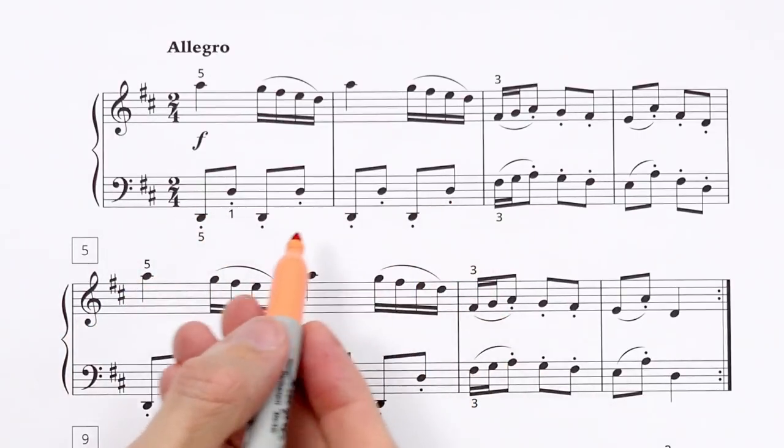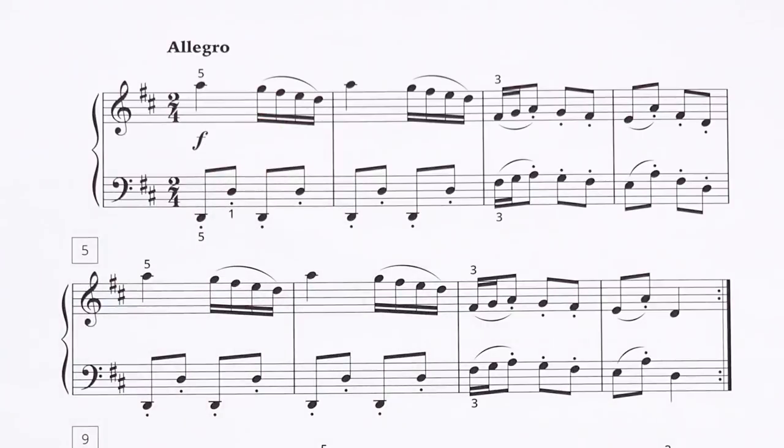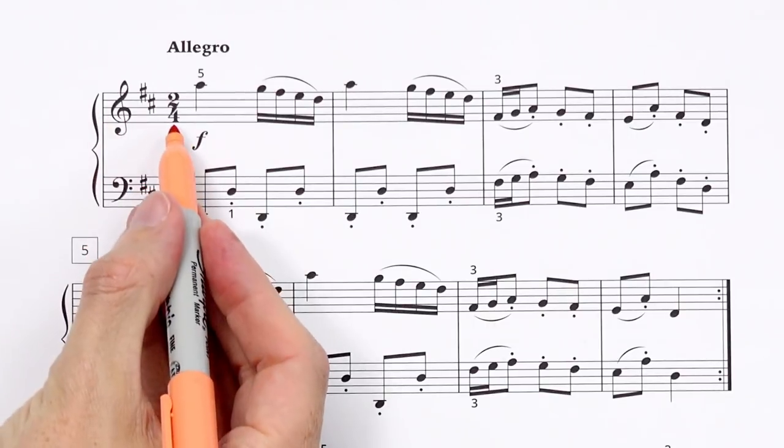And then when you look at the key signature combined with the first two notes the left hand is playing and continues to play, followed by these five notes of the D major pentascale. That tells us that this song will be in D major. By the way you can also check the last note of the piece as well and see that we end on a D.